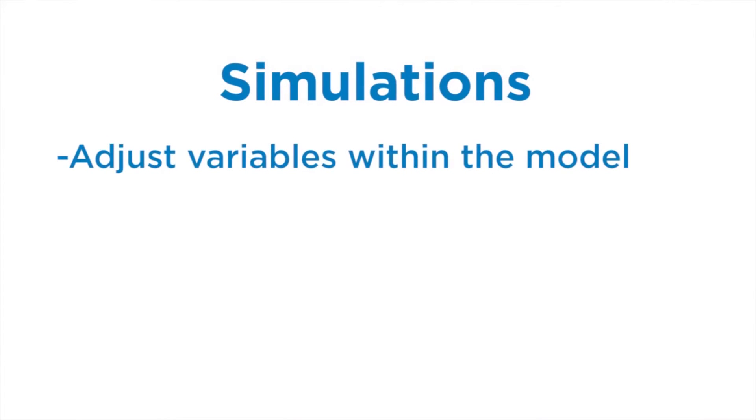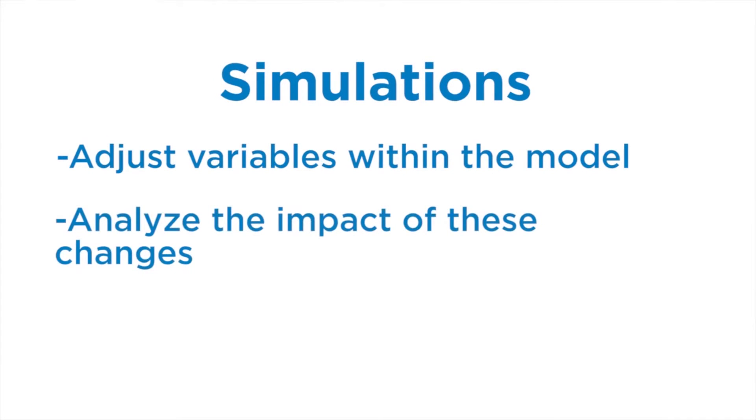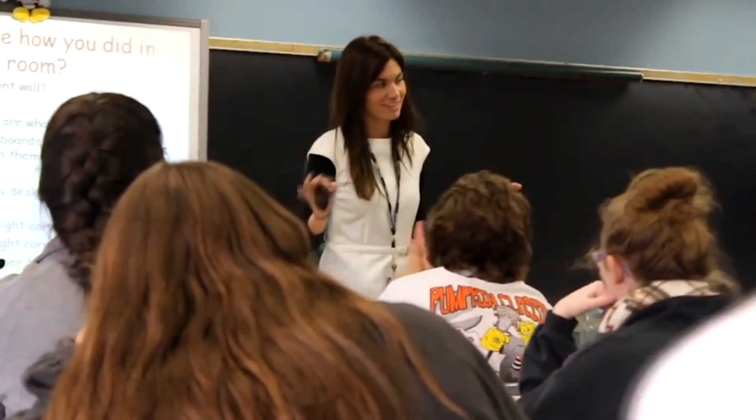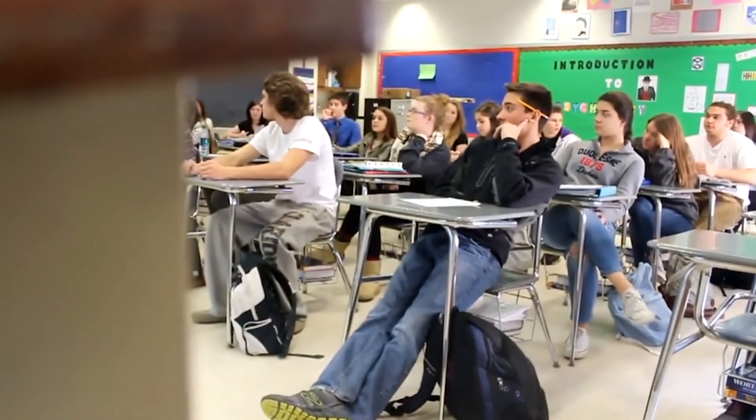What the Social Genome Model allows us to do is run simulations — adjusting variables within the model to see how that changes people's trajectories. This is a really powerful tool because it not only lets us ask big what-if questions, like what if fewer young men were incarcerated or what if we increased the number of teens receiving comprehensive sex ed, but if we have a policy that has a known impact on one of these variables, we can run a simulation and see how that might affect people further down the line.